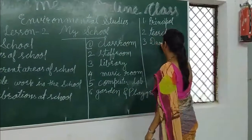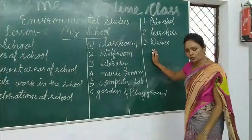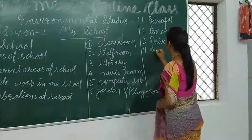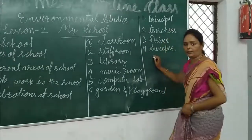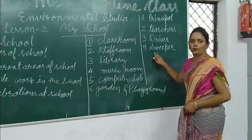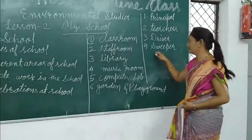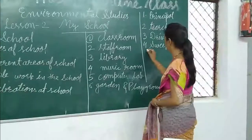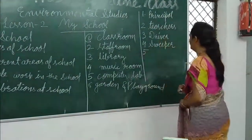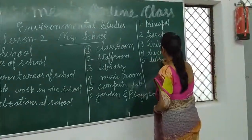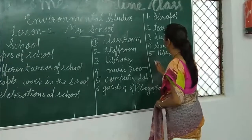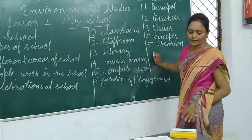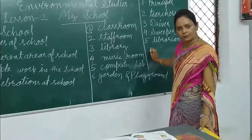Number three is the driver. The driver drives the school bus. Number four is the sweeper. The sweeper cleans the school. It is the duty of the sweeper to keep the school campus clean. He cleans our classroom also. Number five is the librarian. The librarian manages the library and looks after all the books. We can borrow or issue books from the library.